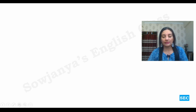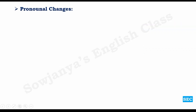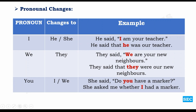Reported speech is also called indirect speech. Let us start with pronoun changes. These are the pronouns that change form in reported speech. 'I' is changed to 'he' or 'she' depending on the sentence. For example: 'He said, I am your teacher' becomes 'He said that he was our teacher.' So here 'I' is changed to 'he.' Another pronoun that changes form is 'we.' They said, 'we are your new neighbors' becomes 'they said that they were our new neighbors.' 'We' changed to 'they.'